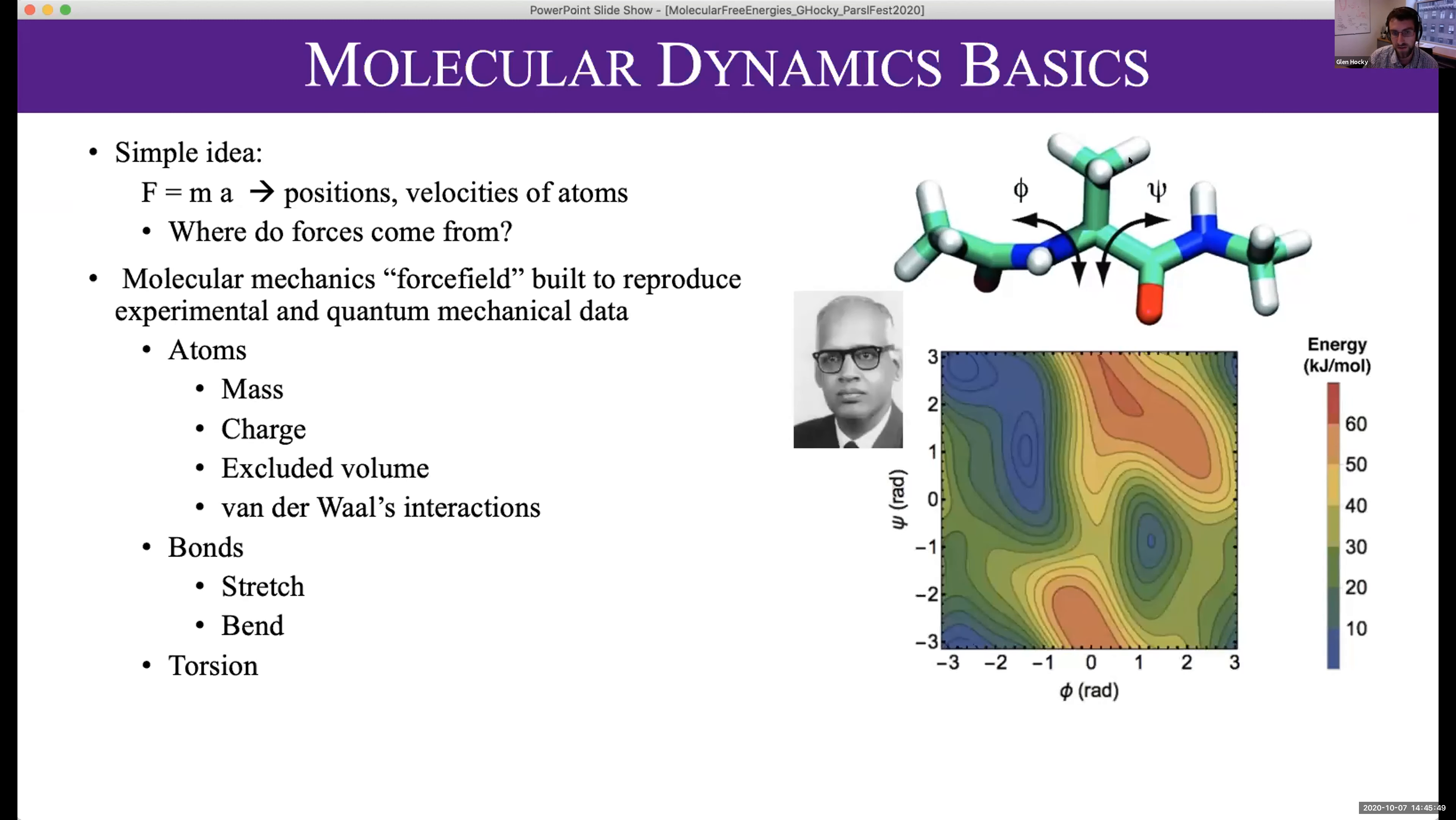This molecule, alanine dipeptide, is the smallest and simplest peptide, which is the foundation of a protein. Ramachandran figured out that if you have these two angles that you can rotate parts of the molecule around, you get an energy surface that looks like this, which says it would like to be in these low energy places. This is a standard benchmark problem for seeing if we can do things correctly.